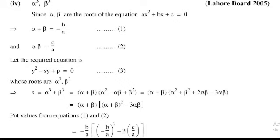So the sum S = alpha³ + beta³. The formula for alpha³ + beta³ can be written as (alpha + beta)(alpha² - alpha·beta + beta²). Adding and subtracting alpha·beta gives (alpha + beta)[(alpha + beta)² - 3·alpha·beta].